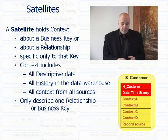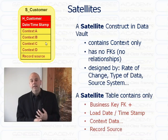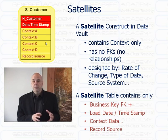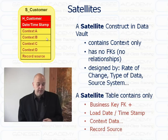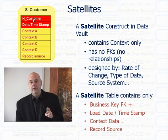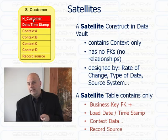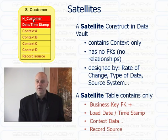If you look at the actual format, satellites contain context only — they don't have their own identity or their own business key. We also tend to create more than one satellite per hub or link, which is one of the big benefits. More than one means we can break them out by things like how quickly things change, what type of data is in it, and what source system they come from. The key structure takes the surrogate key from the hub or the link plus a date-time stamp, and that's what makes each satellite record unique. It has all the context and a record source that tells me where the data came from.